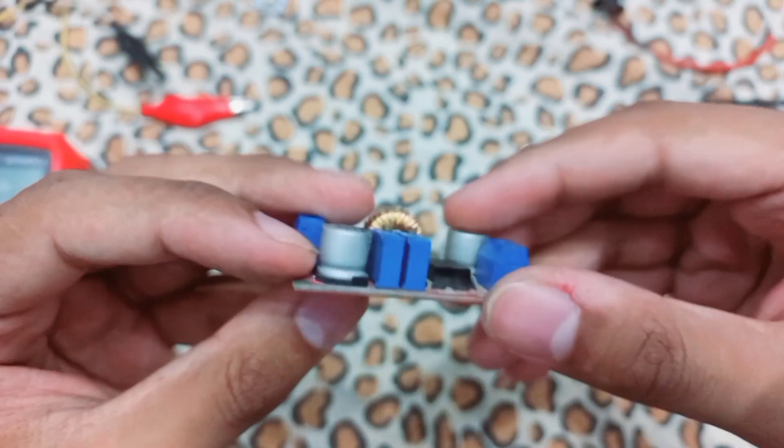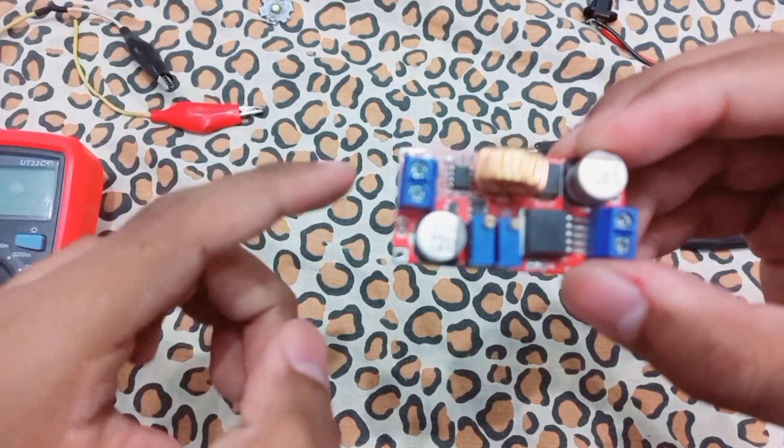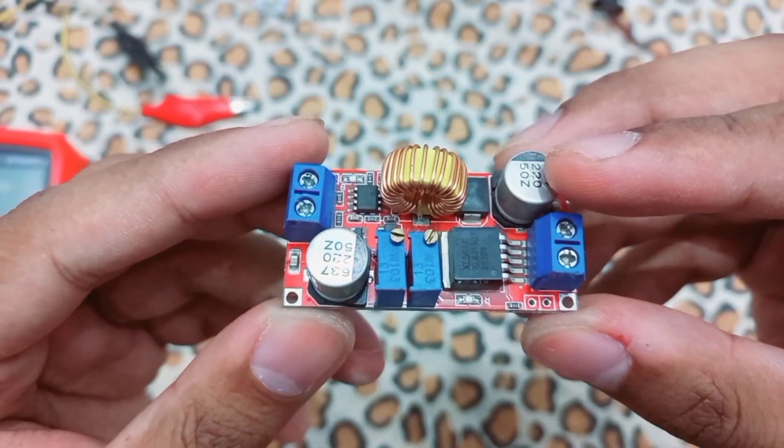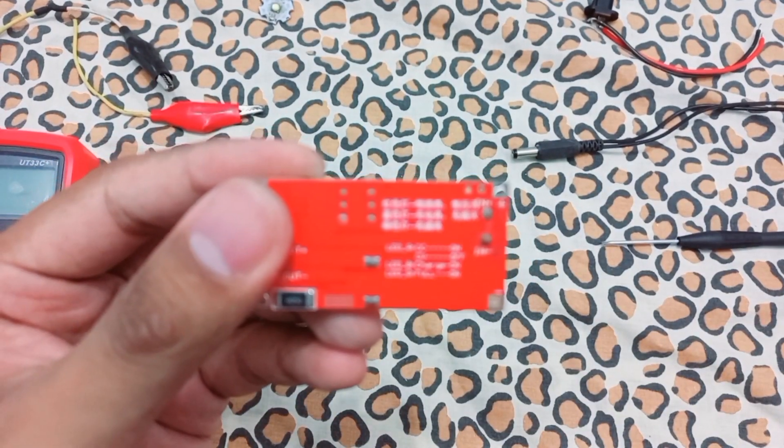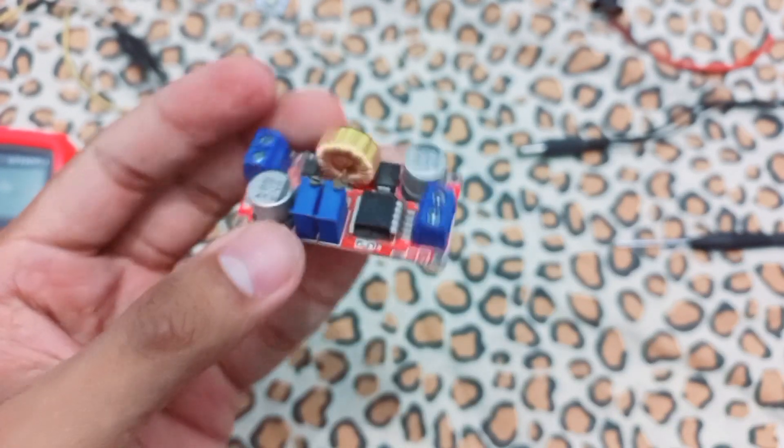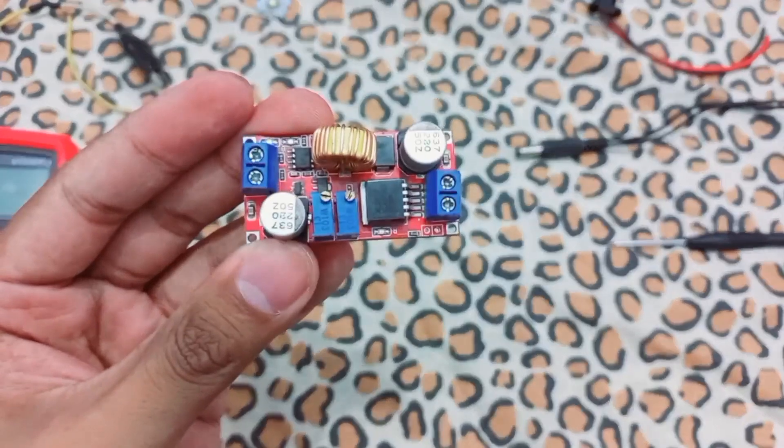The input voltage is about 5 volts to 35 volts DC and it will give you about 1.25 to 32 volt constant voltage regulated. It can handle maximum load of 5 amps. So let's start working.